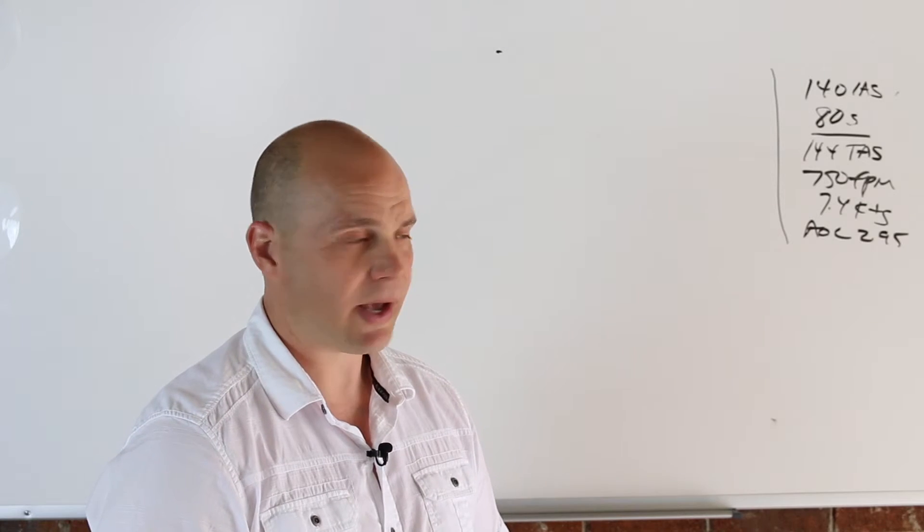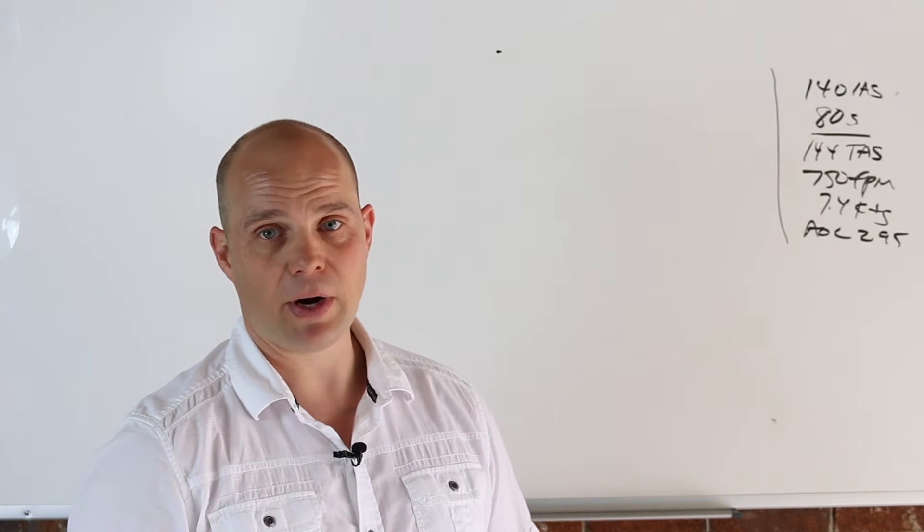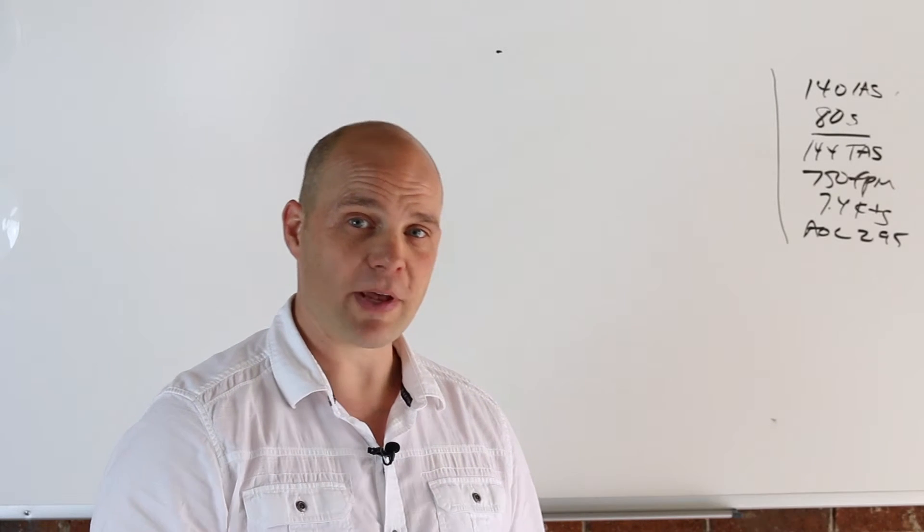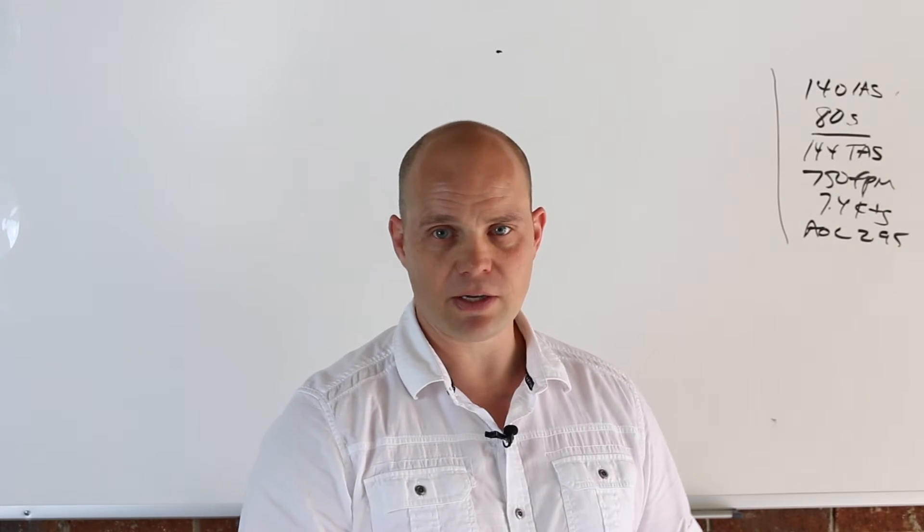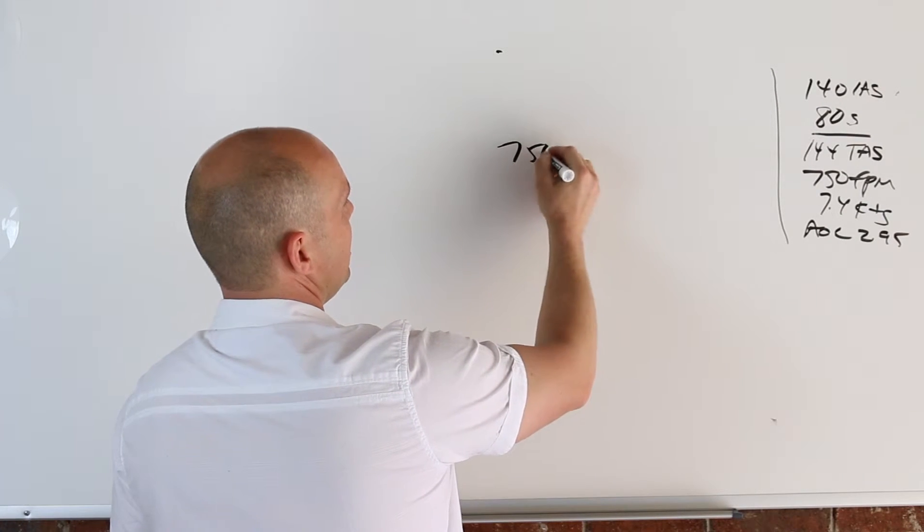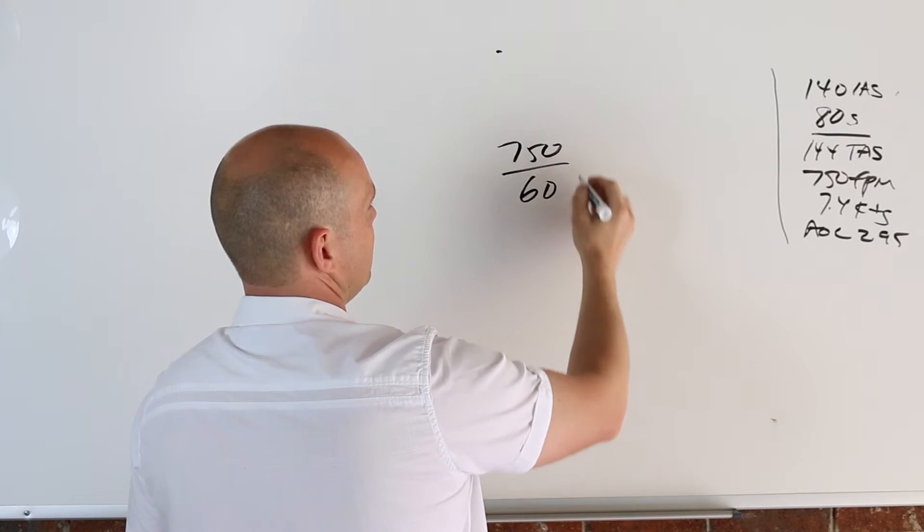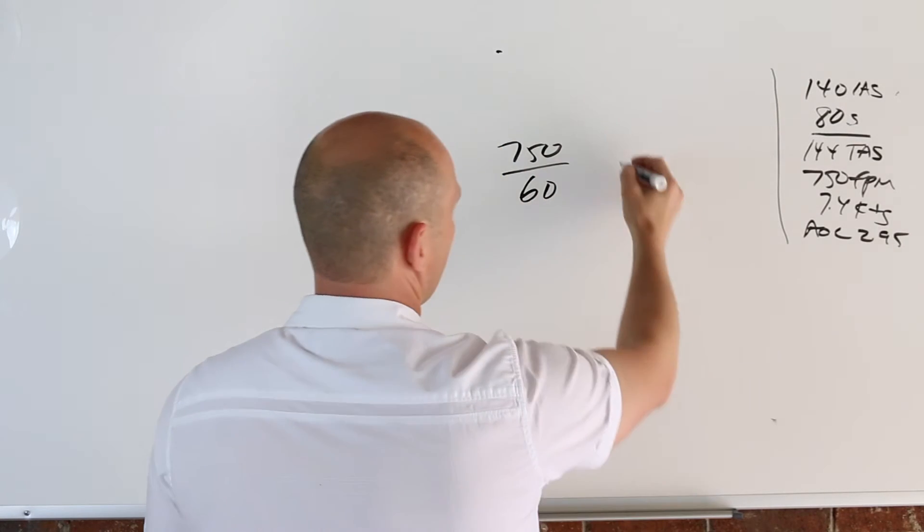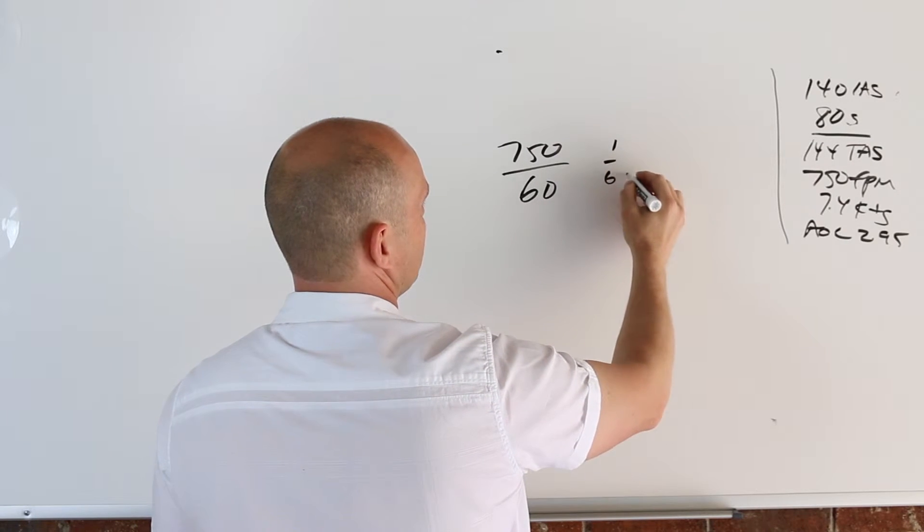As far as this part D, D is asking for you to find specific excess power at VY, and it wants it expressed in feet per second. Now we already know that we have this answer expressed in feet per minute. Once you've solved your table, you'll know what that is. But let's assume that it is 750 feet per minute. It's not, just so you know, but let's assume that it's 750 feet per minute. So really all you're going to do is convert that into feet per second. And so 750 divided by 60, that's feet per second.